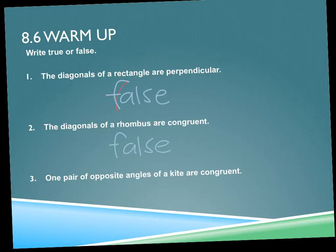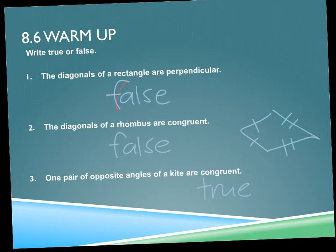Number three says: one pair of opposite angles of a kite are congruent — true or false? True. The two angles where the non-congruent sides meet — if these sides are congruent and these are congruent, then this angle is congruent to this angle. On a kite, the other angles can't be congruent because then it's a parallelogram, and a kite is not a parallelogram.